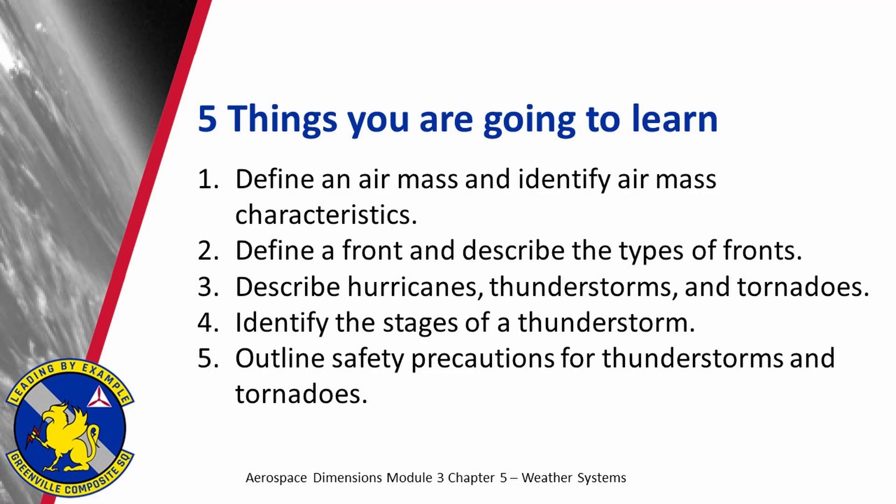My name is Bob Roberts. I'm an aerospace education officer for Civil Air Patrol in Greenville, South Carolina. By the end of this video, you're going to be able to do five things: number one, define an air mass and identify its characteristics; number two, define a front and describe the types of fronts; number three, describe hurricanes, thunderstorms, and tornadoes; number four, identify the stages of a thunderstorm; and number five, outline safety precautions for thunderstorms and tornadoes.